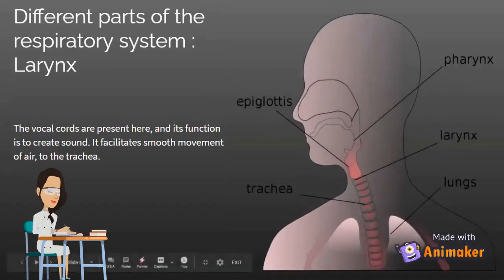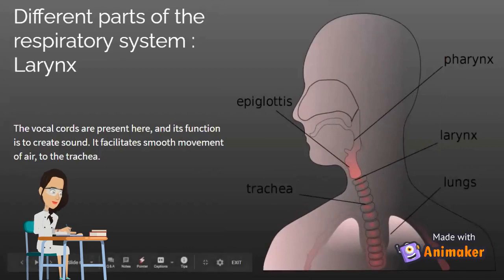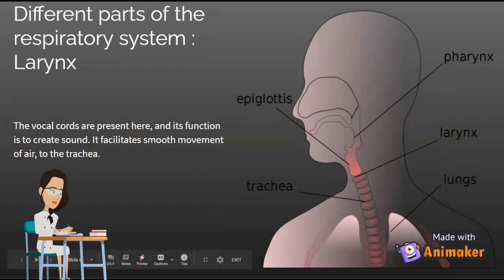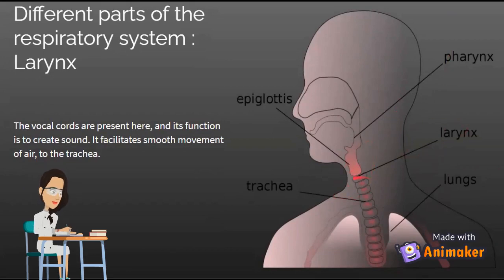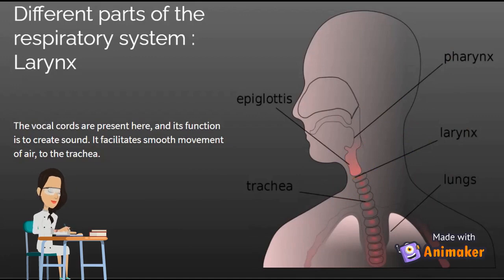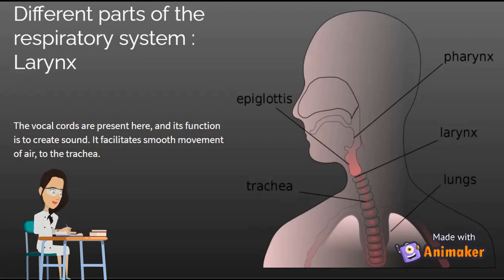Next, we'll be learning about the larynx. The vocal cords are present here, and its function is to create sound. It facilitates smooth movement of air to the trachea. Here is the larynx. What we mean by it facilitates smooth movement of air to the trachea — put your hands near your mouth and say 'puh' — you can feel the air moving.